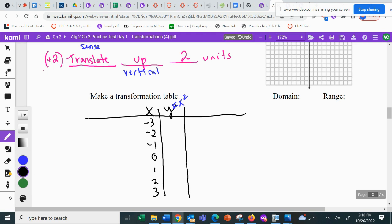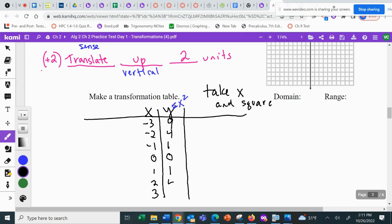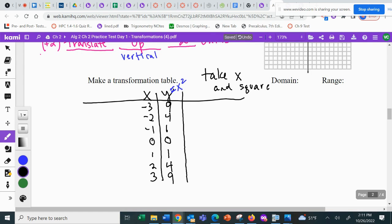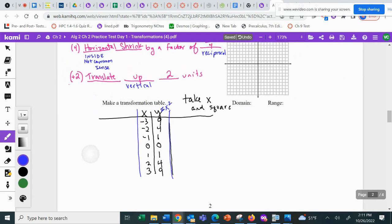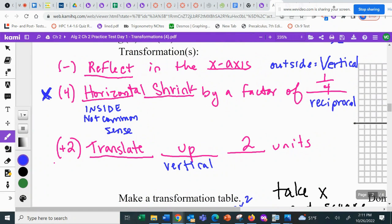The y's, if you happen to forget, you look at the parent function, which is the same in this entire chapter, always x squared. So if I happen to forget the y values, all I have to do is take my x's and square them. Negative three times negative three is nine, negative two times negative two is four, negative one times negative one is one, zero times zero is zero, one times one is one, two times two is four, three times three is nine. They are all positive. That's why the graph goes down and comes right back up.